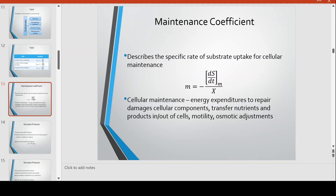Cellular maintenance is the energy expenditure to repair damages to cellular components, transfer nutrients and products in and out of cells, for motility and osmotic adjustment. As an analogy to a household budget, the maintenance coefficient is like the bills you pay for maintaining your internet, water, and electric bills — basically the maintenance of your household.